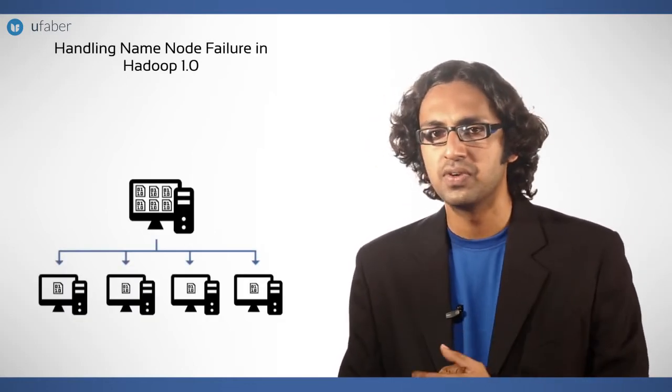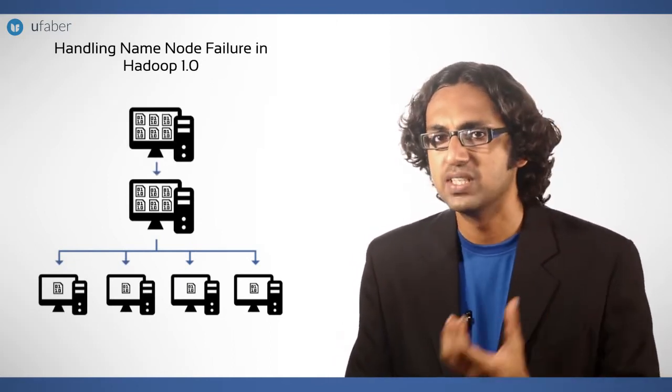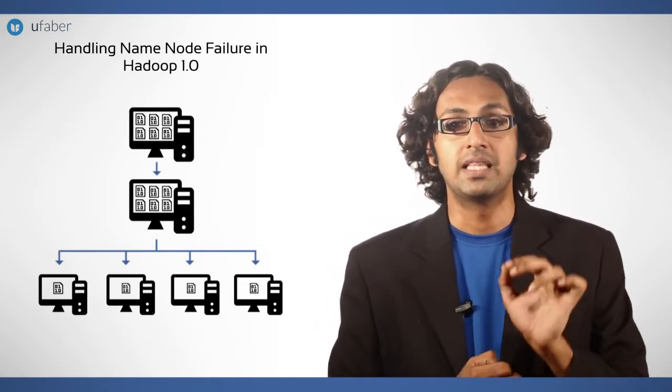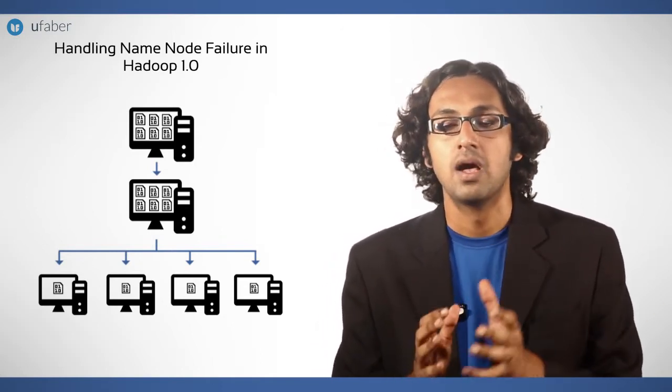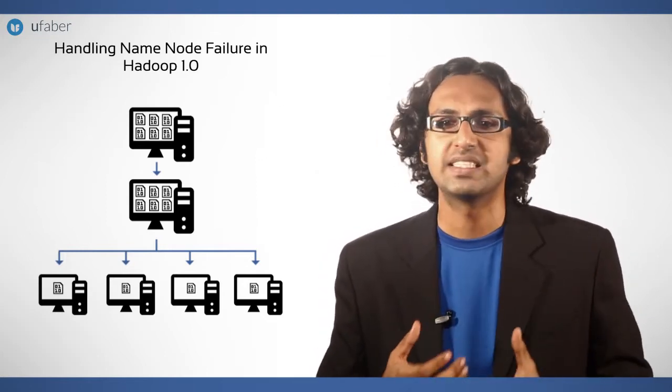Handling name node failure in Hadoop 1.0: To avoid losing data during name node failure, we need to set up a backup node. As we have discussed in the previous session, there is a backup node available that periodically takes updates from the name node. By doing so, the backup node maintains a copy of HDFS with it.